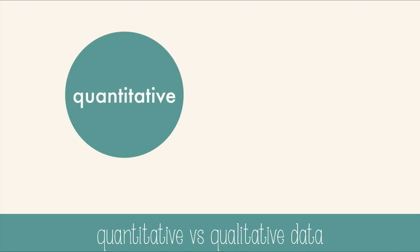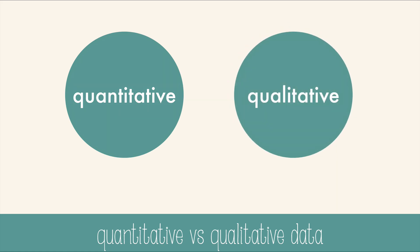Quantitative data uses numbers, like 42 elephants or 10.5 meters. Qualitative data is a description, like yellow or bubbling or soft.